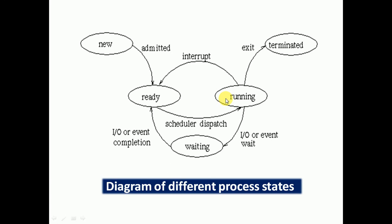When the processor or CPU is available, the process goes to the running state. When the task or execution is completed, the process exits — that is the terminated state — and it exits from the main memory. These are the different process states. Thank you, and subscribe to our channel Logic Computer Institute for more videos.